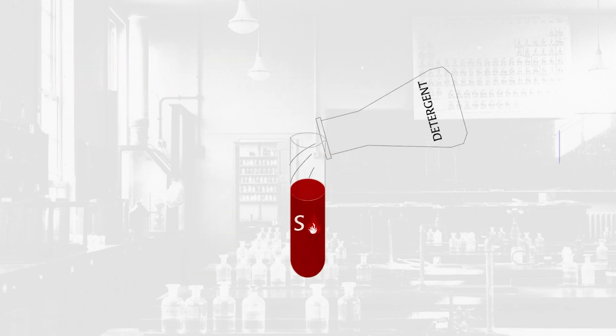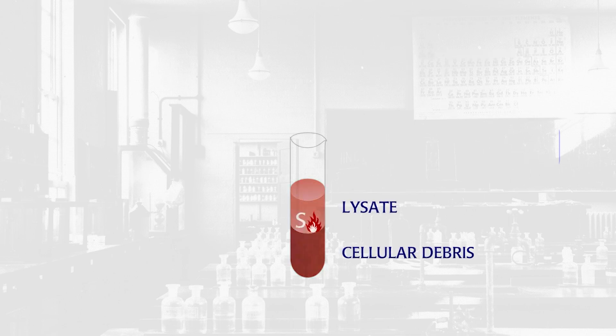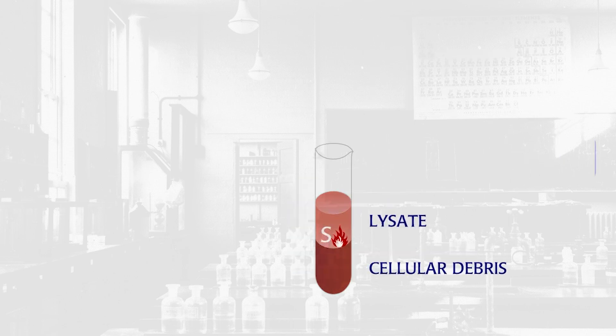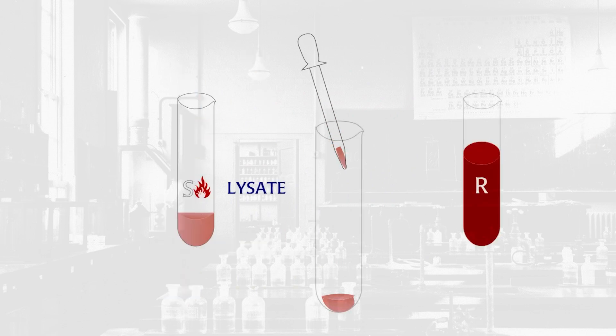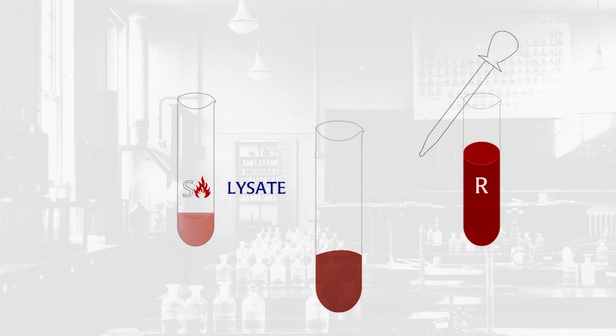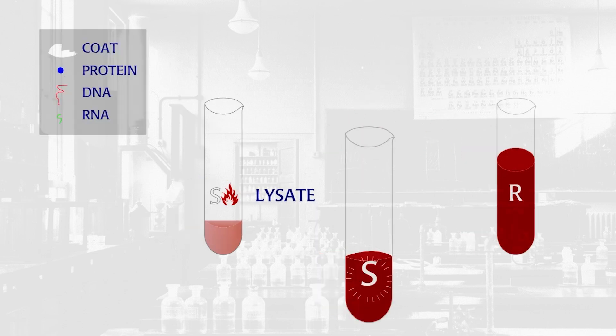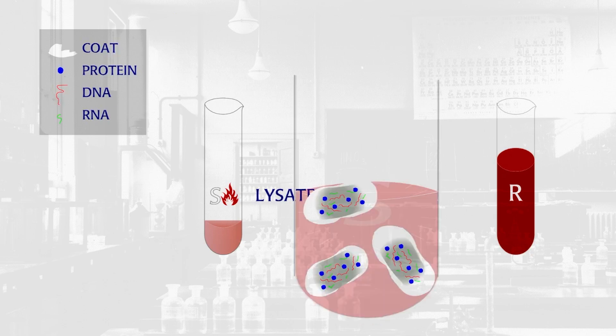First, they used detergent to lyse the heat-killed S-strain cells and used these lysates for transformation assays. The test tube assays worked well and showed that the heat-killed S-lysates could change R-strain into S-strain. The transforming principle was something in the lysates.